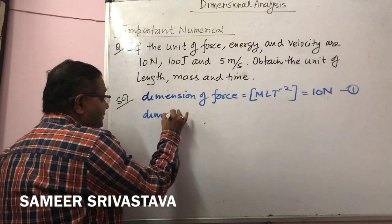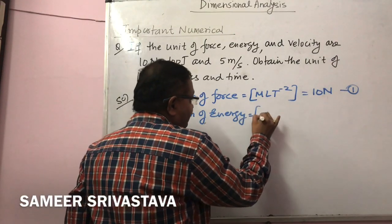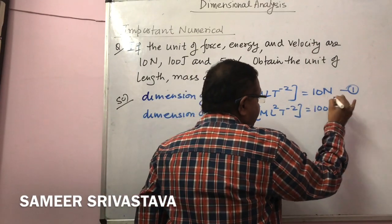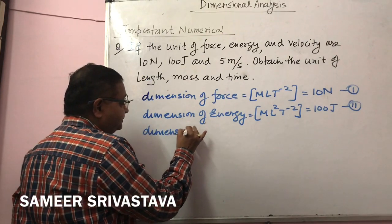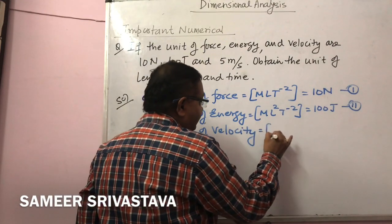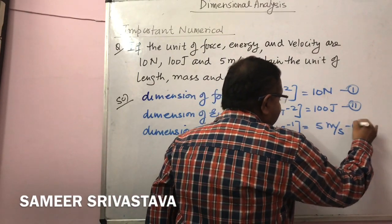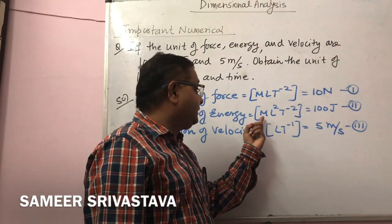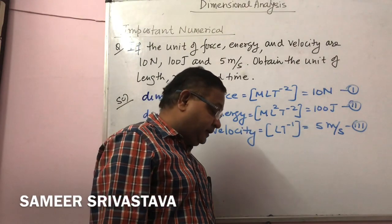Dimension of energy is ML²T⁻², which equals 100 J — equation 2. Dimension of velocity is MLT⁻¹ (i.e., LT⁻¹), which equals 5 m/s — equation 3. We now have three equations: MLT⁻² = 10, ML²T⁻² = 100, LT⁻¹ = 5.